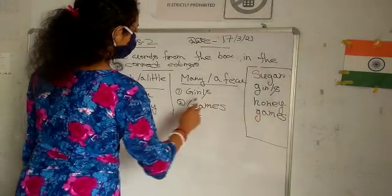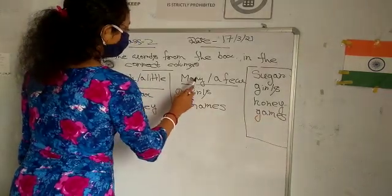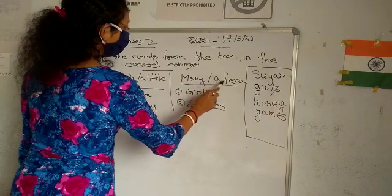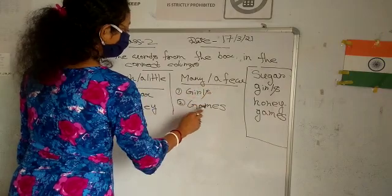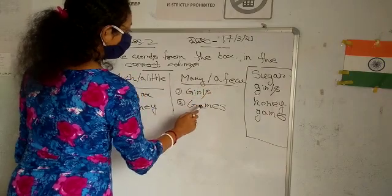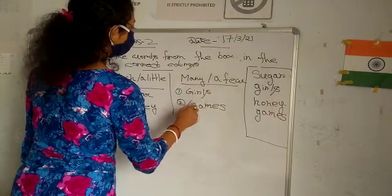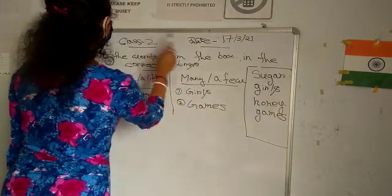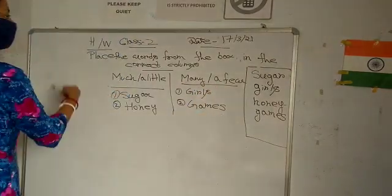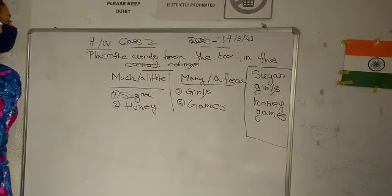And the last one is games. Games will go under 'many or a few', so below we have: many games, a few games. So this is your homework class for today. Thank you.